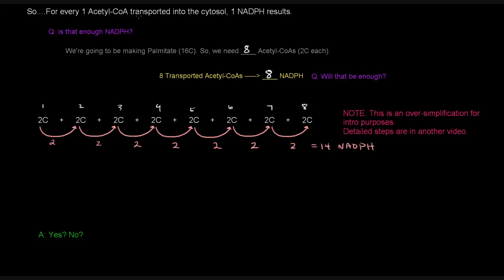So, if transporting the acetyl-CoAs out into the cytosol gives us eight NADPH, right, assuming we're building palmitate, that means, well, how many of these steps are accounted for? If we have eight NADPHs, that means these right here are covered, right? We have enough NADPH that results from the transport to cover these first four rounds, but then these last rounds are not covered. So, we still need six more NADPHs. So, these are not covered or accounted for.